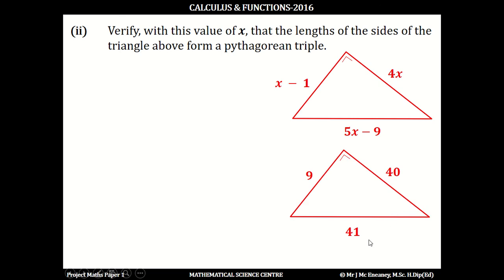So we want to show that Pythagorean theorem works with these numbers. So 41 squared should equal 40 squared plus 9 squared. And 41 squared is 1681, and that equals 40 squared is 1600 plus 81. And you can see 1681 does equal 1681.